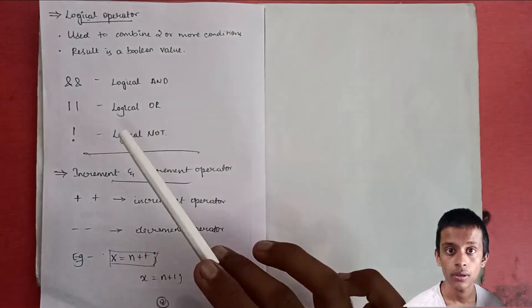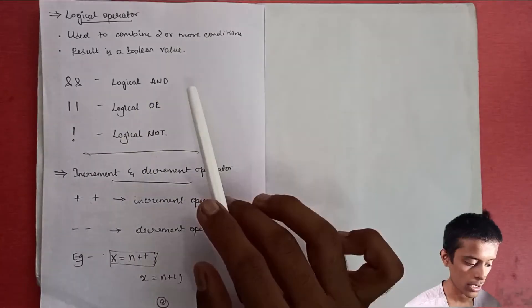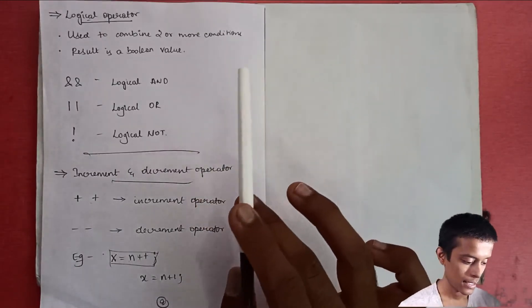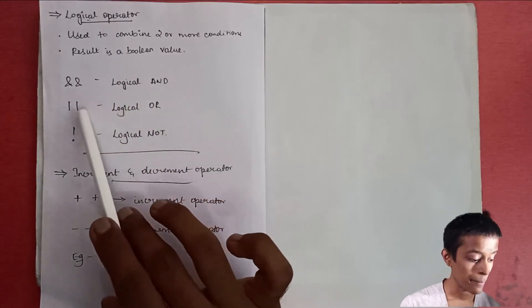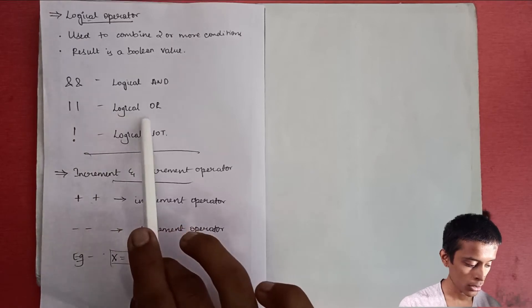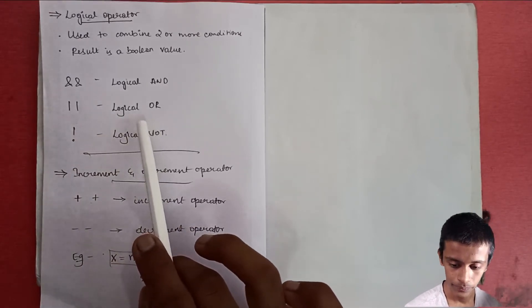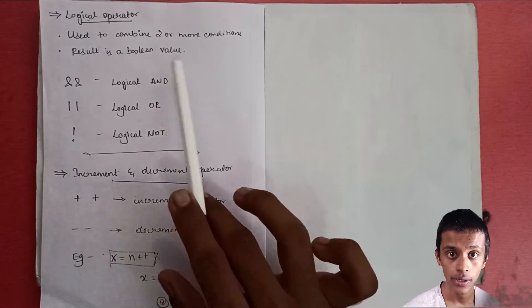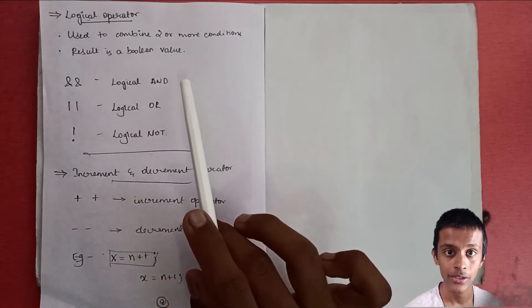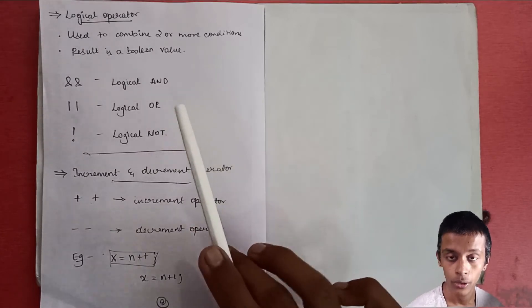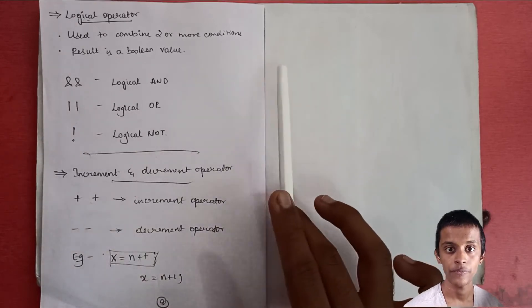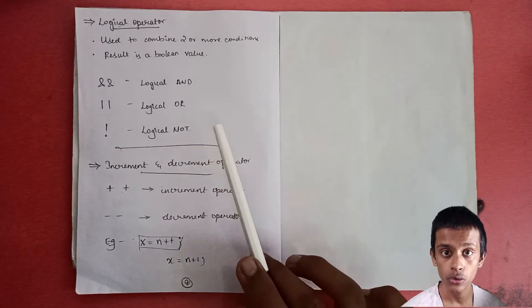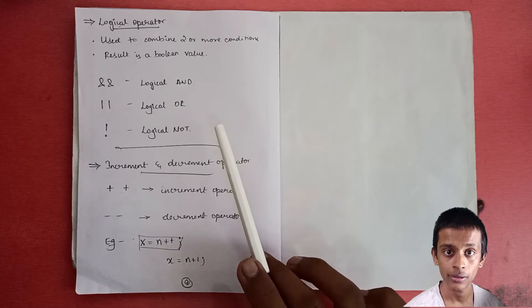Logical operators are used to combine two or more conditions, and the result is a boolean value — either true or false, that is 0 or 1. '&&' is logical AND, '||' is logical OR, and '!' (exclamation mark) is logical NOT. Logical AND returns true when both conditions are true. Logical OR returns true if any one of the two conditions is true. Logical NOT returns true if the condition under consideration is not satisfied.